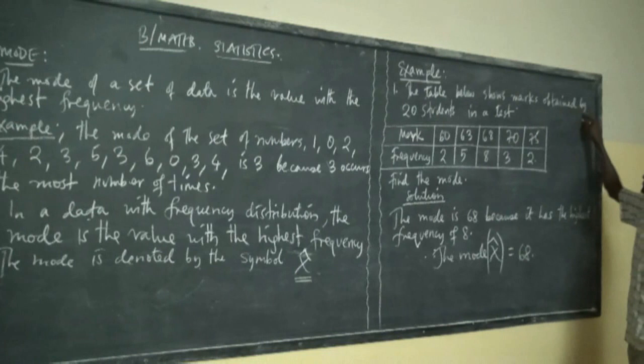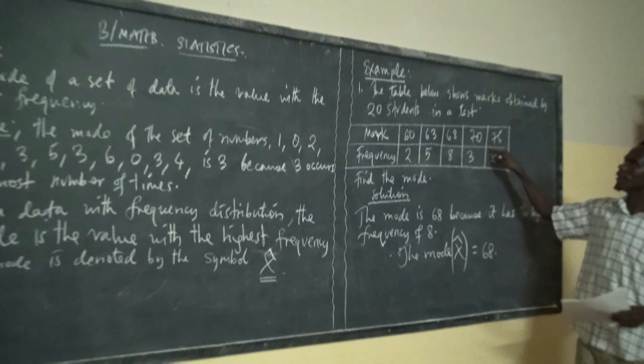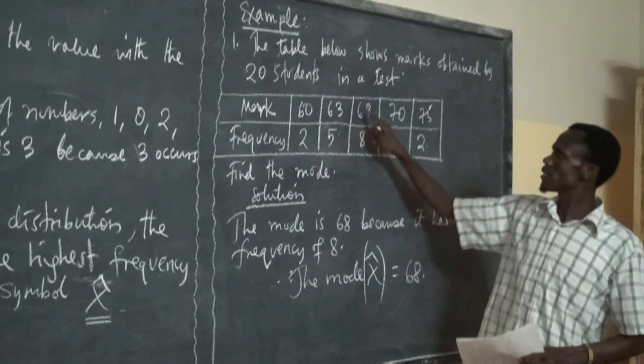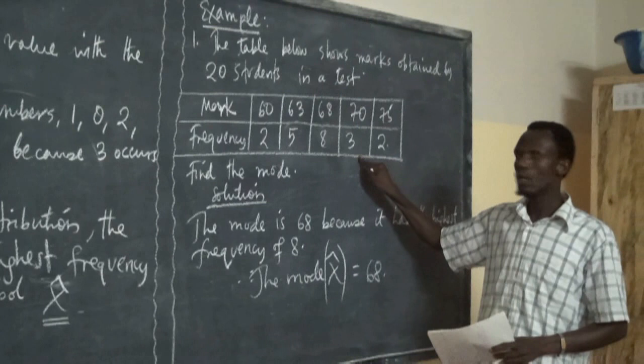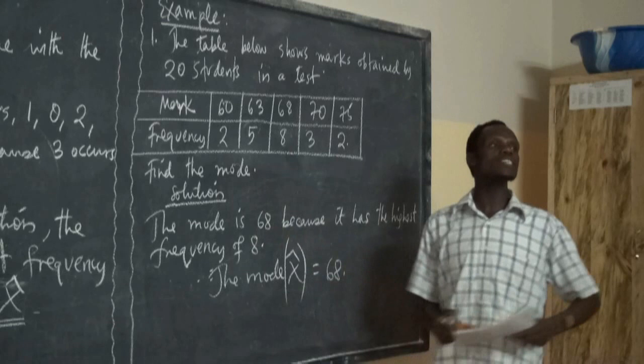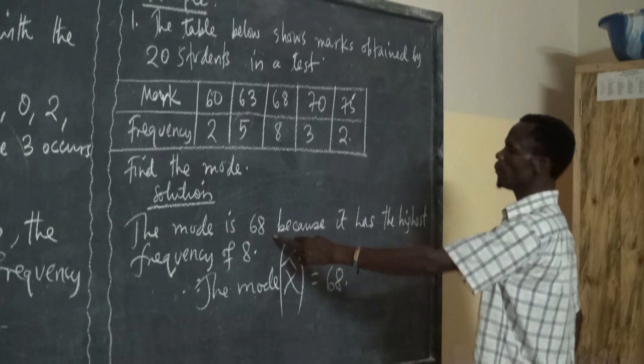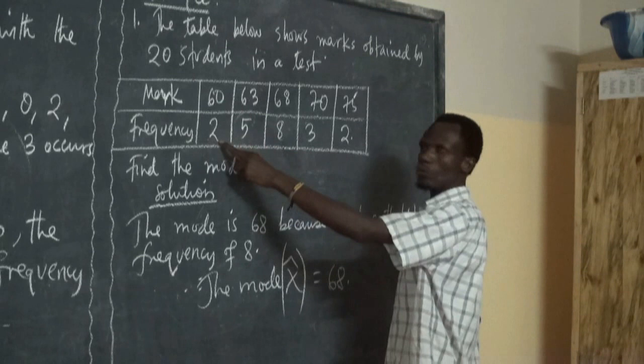Example: the table below shows marks obtained by 20 students in our test. The marks are: 60 — 2 students, 63 — 5 students, 68 — 8 students, 73 — 3 students, 75 — 2 students. Find the mode. You only look at the marks which have got the highest frequency — the mode is 68, because it has the highest frequency of 8.